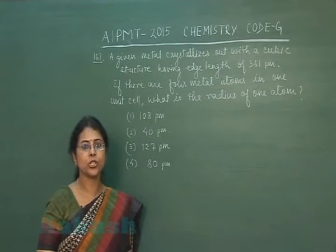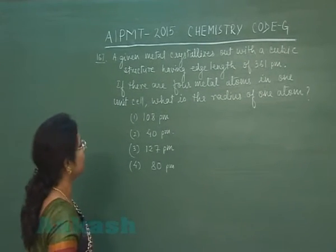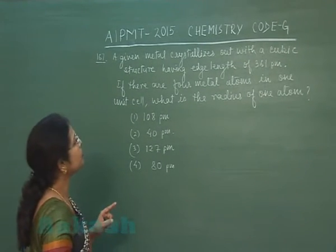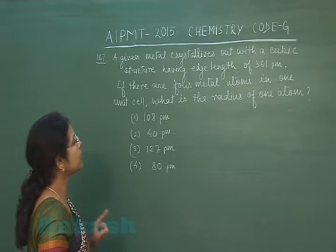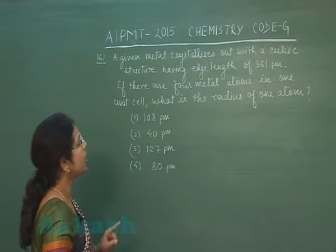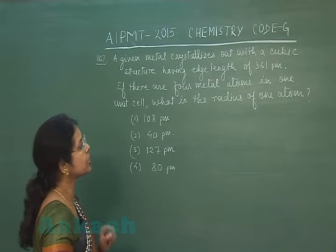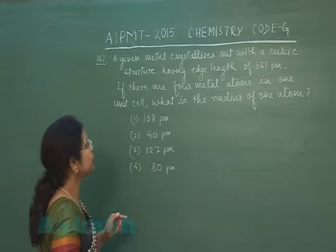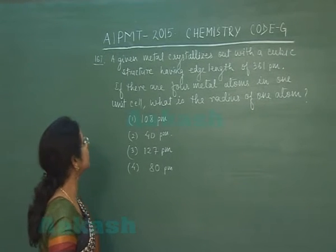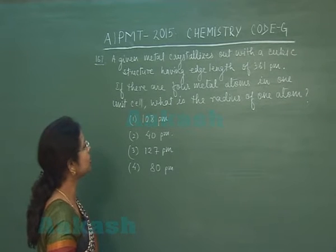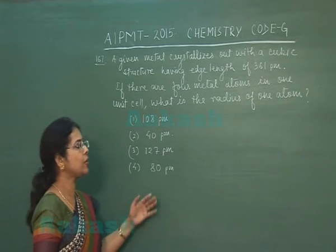Moving to question number 167: a given metal crystallizes with a cubic structure having edge length of 361 picometers. If there are four metal atoms in one unit cell, what is the radius of one atom?